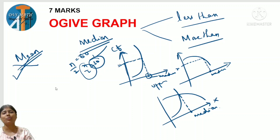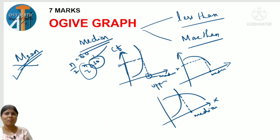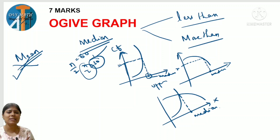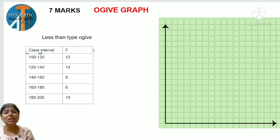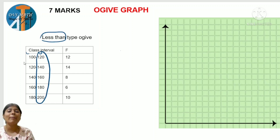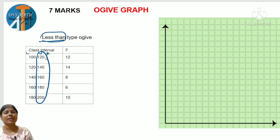For ogive graph, when plotting you go along class intervals with cumulative frequency. The main thing to observe is the scale. I am going to explain two less than type ogive and two more than type ogive examples and give you homework to practice. Let us start with less than type ogive. Observe the class interval - in less than type ogive we consider the upper limit as the x-coordinate.